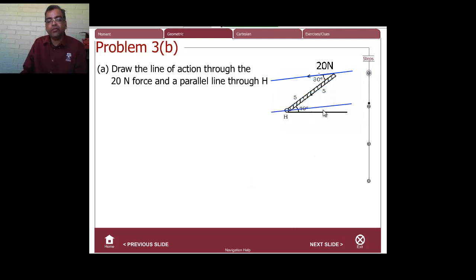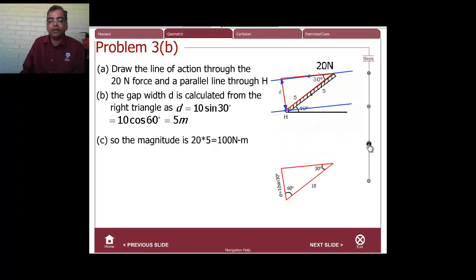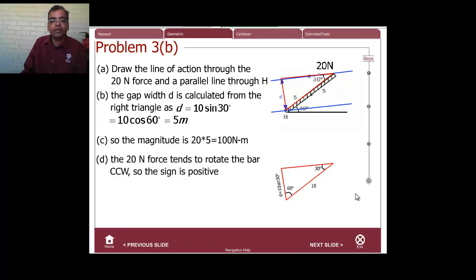Draw the parallel line and figure out the angle. Using similar triangle reasoning — two parallel lines cut by a transversal — the angle is about 10 degrees. So the gap d = 10·sin(30°). The magnitude is 5 times 20 = 100 newton meters, and the direction is counterclockwise.